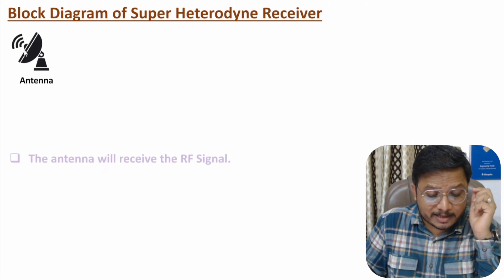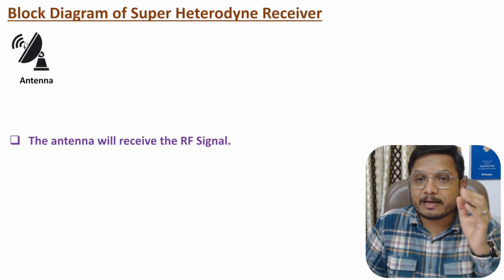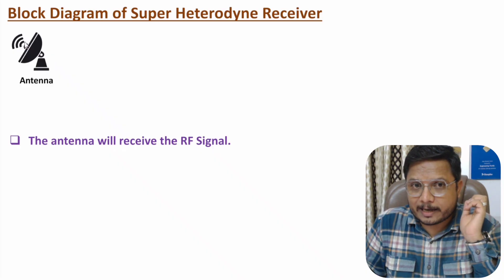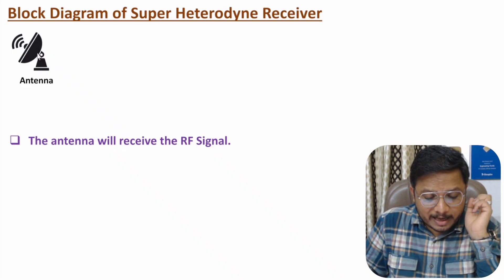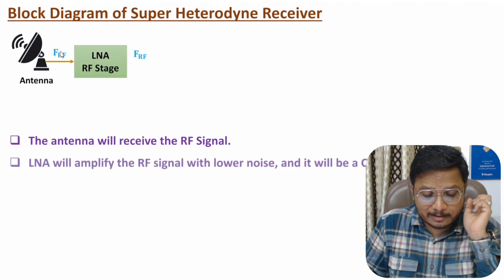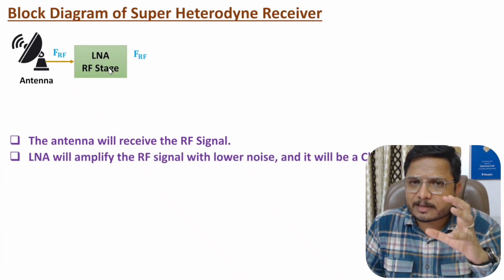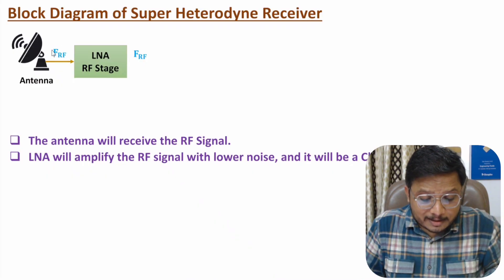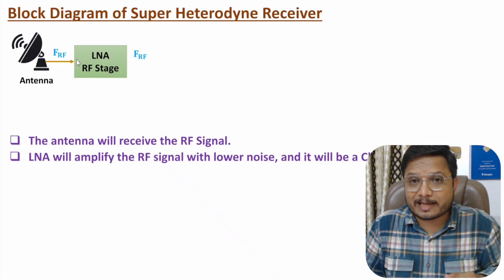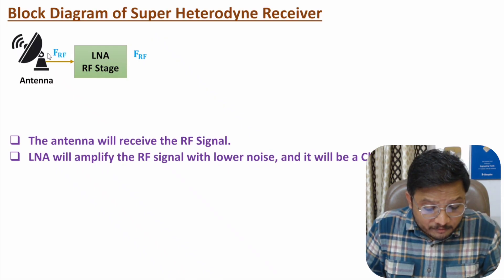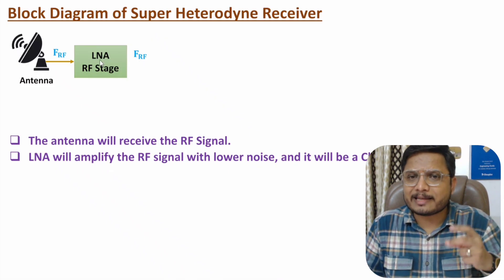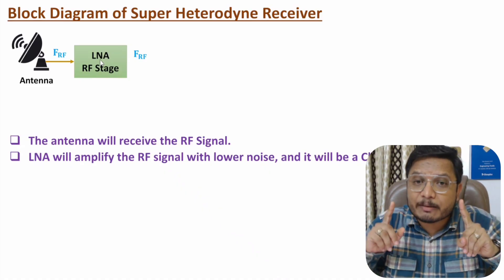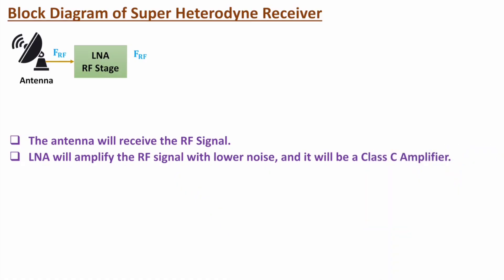In the block diagram, the first element is the antenna. This antenna will be receiving the RF signal. That received RF signal is given to the low noise amplifier first. Whatever signal we receive will be having noise, so we need to remove noise and also amplify the signal since it is weak in strength. The low noise amplifier performs two tasks: amplification with minimum noise. This low noise amplifier amplifies the RF signal with lower noise, and it is usually a class C amplifier.